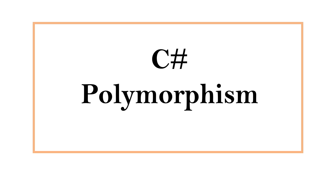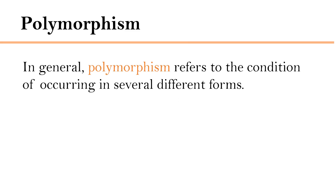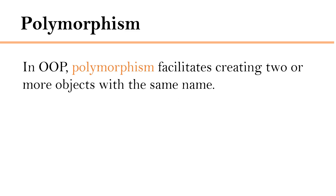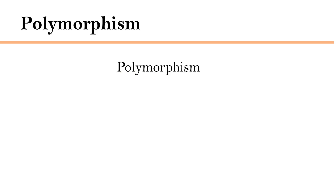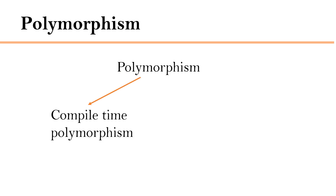Hi, this is Sahana. In this video we are going to discuss another important concept of object oriented programming: polymorphism. In general, polymorphism refers to the condition of occurring in several different forms. In object oriented programming, polymorphism facilitates creating two or more objects with the same name.